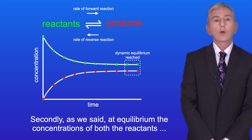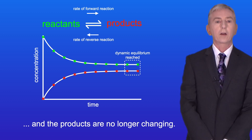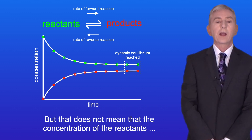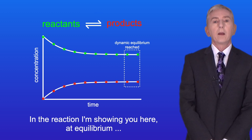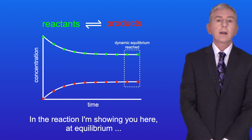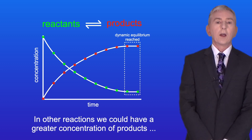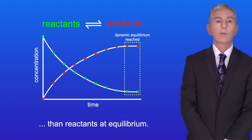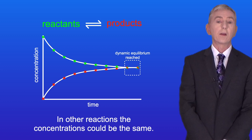Secondly, at equilibrium, the concentrations of both the reactants and the products are no longer changing. But that does not mean that the concentration of the reactants is the same as the concentration of the products. In the reaction shown here, at equilibrium, we have a greater concentration of reactants than products. In other reactions, we could have a greater concentration of products than reactants, or the concentrations could be the same.